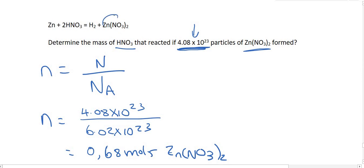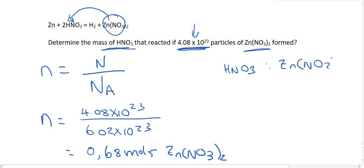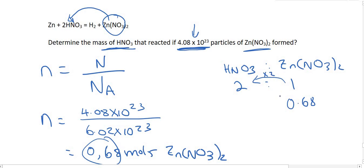Now we have the moles of zinc nitrate and they want to know the mass of HNO₃, so we need to work out the moles of HNO₃. The ratio of HNO₃ to zinc nitrate in the equation is 2 to 1. We have 0.68 moles of zinc nitrate, so we multiply by 2, giving us 1.36 moles of HNO₃.